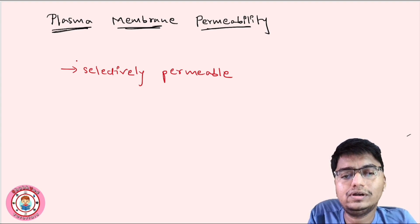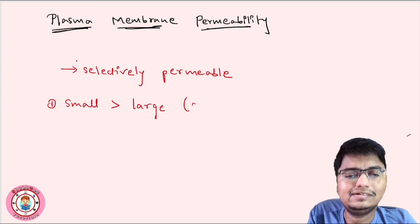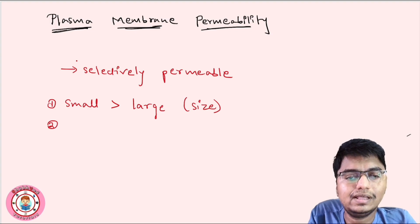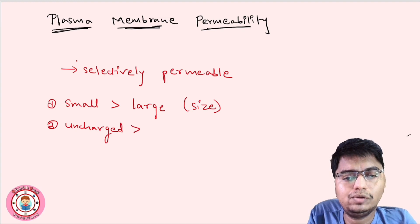Basically, what is the order? We'll discuss three important points. Small molecules are more permeable than large molecules. This is depending on size. Second, uncharged molecules are more permeable than charged molecules. This is on the basis of charge.